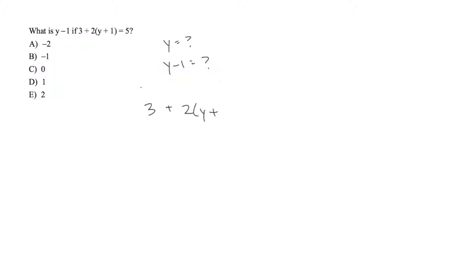3 plus 2 times the quantity of y plus 1 equals 5. If I distribute that 2, we have 3 plus 2y plus 2 equals 5. Combine these like terms: 2y plus 5 equals 5. 2y equals 0, therefore y equals 0. Next, if we subtract 1 from y, we have to subtract 1 from the other side as well, so y minus 1 equals negative 1. In this case, it's B.